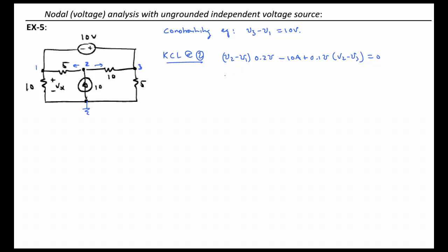Let's collect terms here. We've got negative 0.2 V1, and we have 0.2 plus 0.1, so 0.3 V2, and we have negative 0.1 V3, and that is equal to 10 amps.